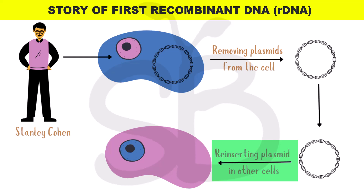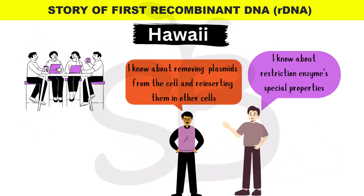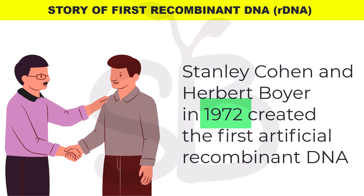Another technique involves Stanley Cohen. Scientists will meet at different conferences — they met in Hawaii at a conference. There, they met Stanley Cohen and discussed these ideas about recombinant DNA.